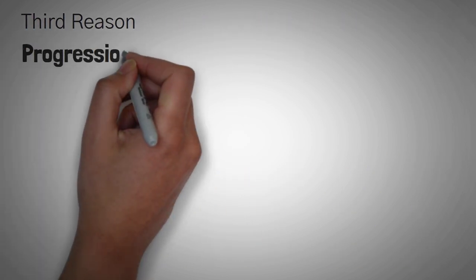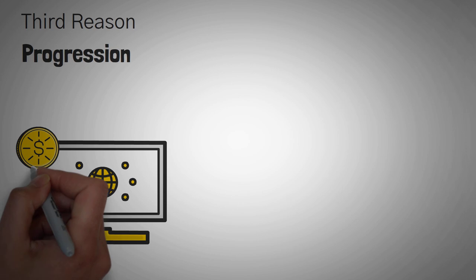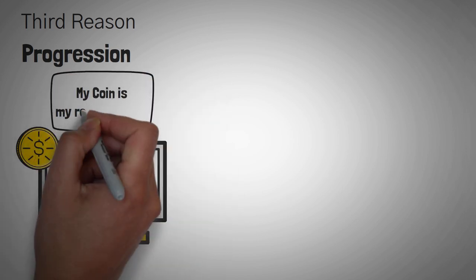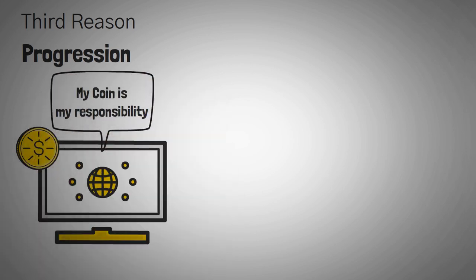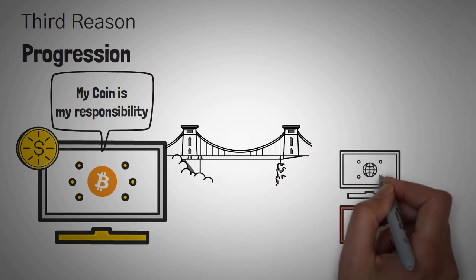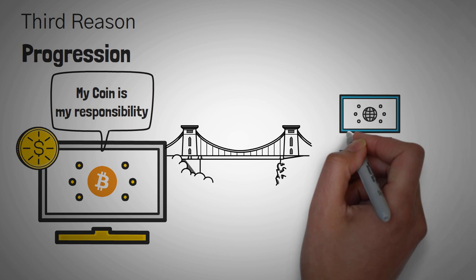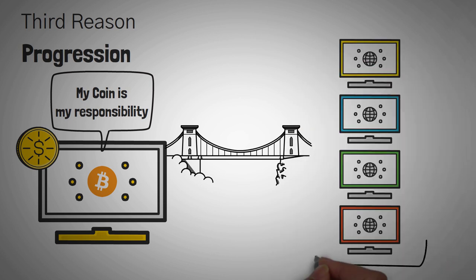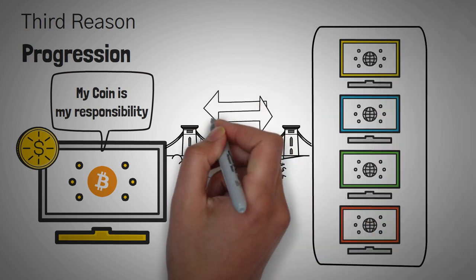And lastly, we need bridges for progression. In the current state, the responsibility is on each of the different blockchains to innovate, solve security issues, and be able to scale. For example, what bitcoin brings to the table, ethereum cannot really use to make better. This is where bridging will come in. In turn, it'll turn cryptocurrencies into more of a team sport, working all together to make crypto a more all-around solution to the problems that it's trying to solve.